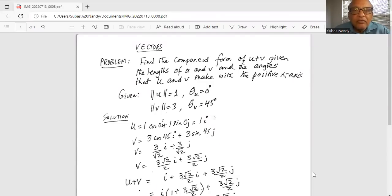Find the component form of u plus v given the lengths of u and v and the angles that u and v make with the positive x-axis. So the magnitude of u is 1 and theta of u is equal to 0 degrees. Magnitude of v is equal to 3 and theta of v is 45 degrees.